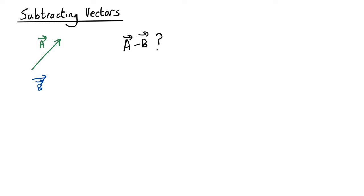Geometrically there are, once again, two ways to do it. One way is to put the two vectors tail to tail and go from the tip of b to the tip of a. So that's the difference.